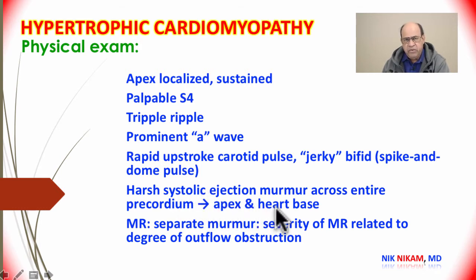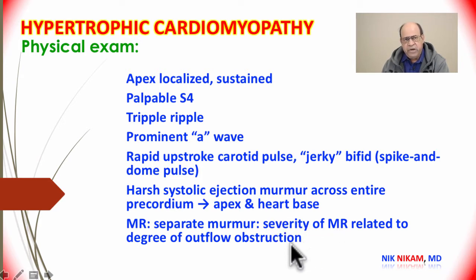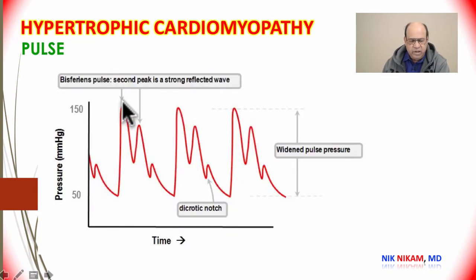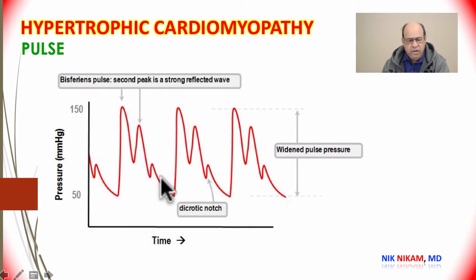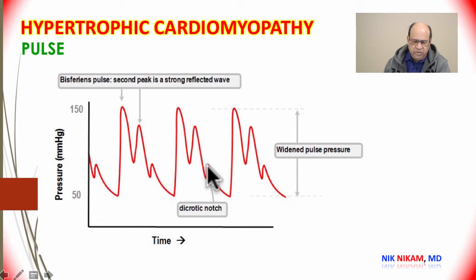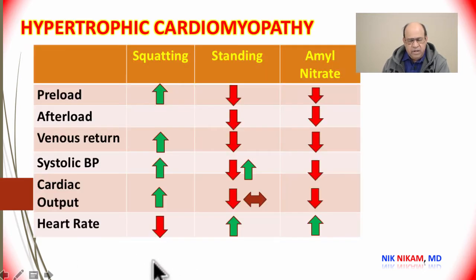There is a harsh systolic ejection murmur across the entire precordium radiating to the apex and to the base of the heart. There may also be a holosystolic mitral regurgitant murmur depending on the severity of left ventricular outflow tract obstruction. Here is a good example of a patient's pulse showing the double peak known as pulsus bisferiens, along with increased pulse pressure and the dicrotic notch.